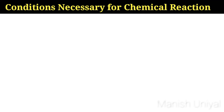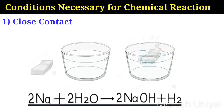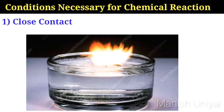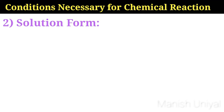What are the conditions necessary for chemical reactions? Number one is close contact. For a chemical reaction to take place, the reactants must come into close contact — that is, they should be mixed. For example, sodium reacts with water violently when they come in contact with each other to produce sodium hydroxide and hydrogen. Therefore, in the laboratory, sodium is stored in kerosene oil to prevent its contact even with moisture. The second necessary condition is solution form.